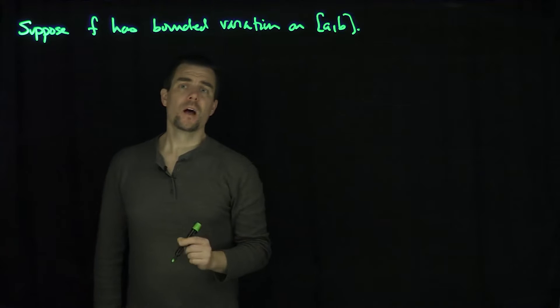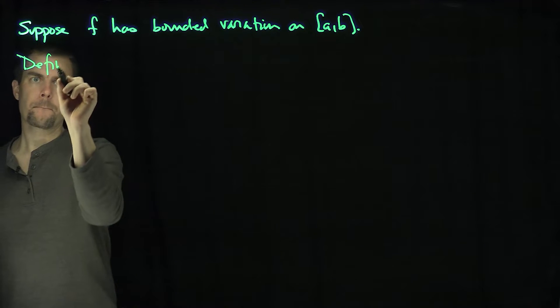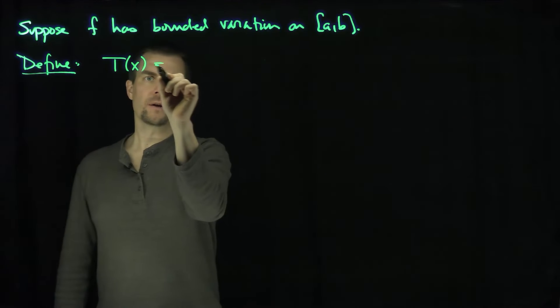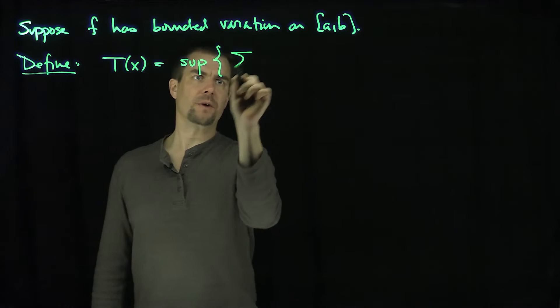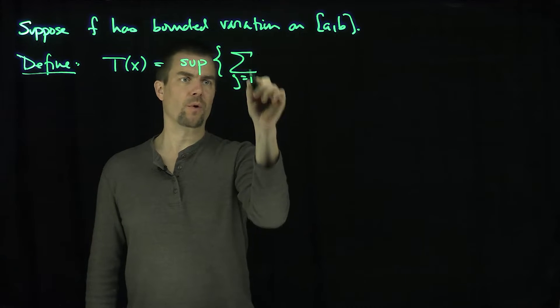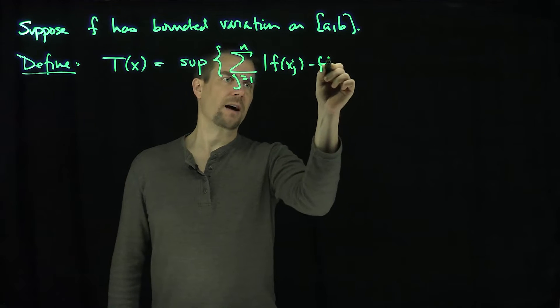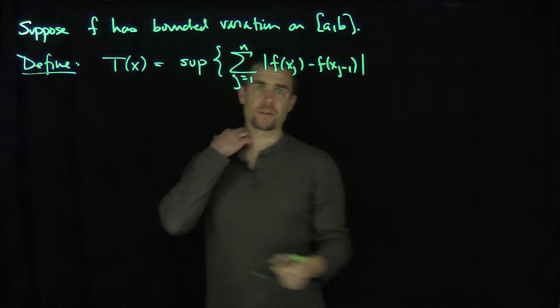I'm going to define a new function, define T of x to be the supremum of these expressions: the sum j goes from 1 to n of F of xj minus F of xj minus 1. That looks exactly like the definition of bounded variation,